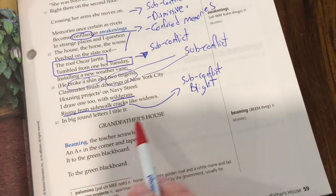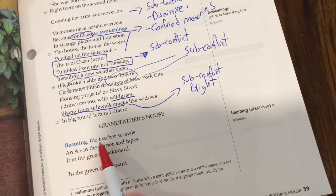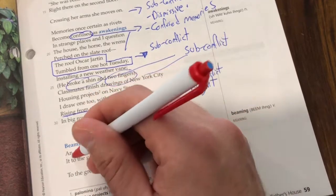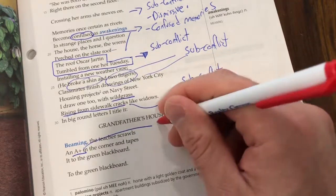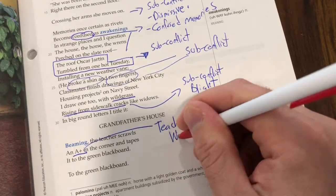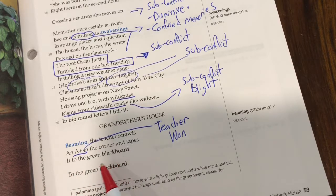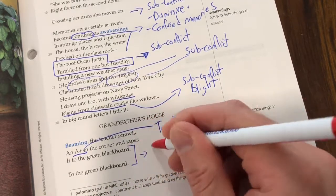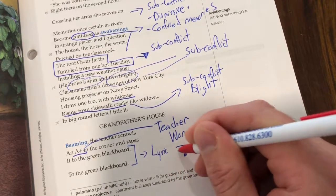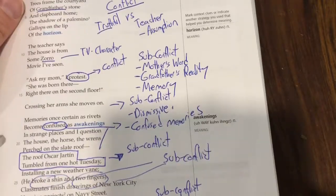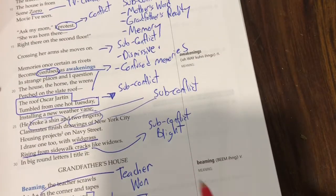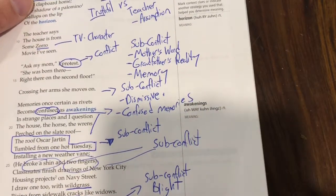Like windows in big round letters, the speaker titles it 'Grandfather's House.' Beaming, the teacher scrawls an A+. It looks like the bad guy won. Not only do we have our main conflict, but it's resolved here — the teacher won, the assumption-making, stereotyping teacher won. The central conflict here is between the student's reality versus the teacher's assumptions. Look at all the different small conflicts it implicates: his mother's word, grandfather's reality, his memory.